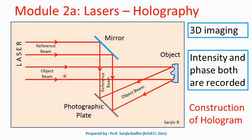The other part is called the object beam. This object beam is allowed to fall on the object whose image is to be recorded. Waves in the object beam are reflected from different parts of the object and collected at the photographic plate. The waves in the object beam and the waves in the reference beam interfere with each other, and that interference pattern is recorded on the photographic plate — this is how a hologram is formed. A hologram does not contain a distinct image of the object; it is only a record of the interference pattern.